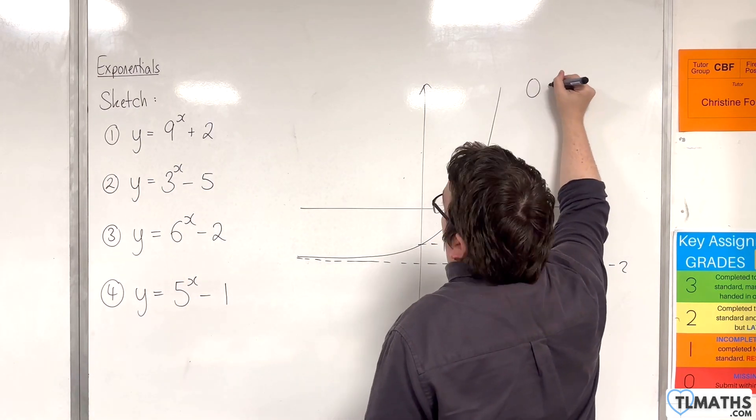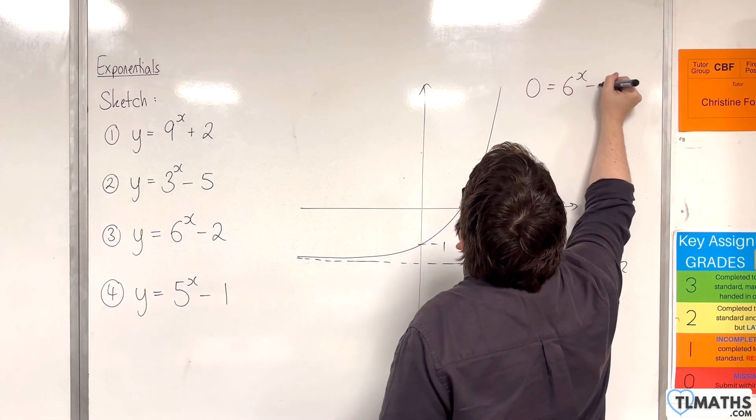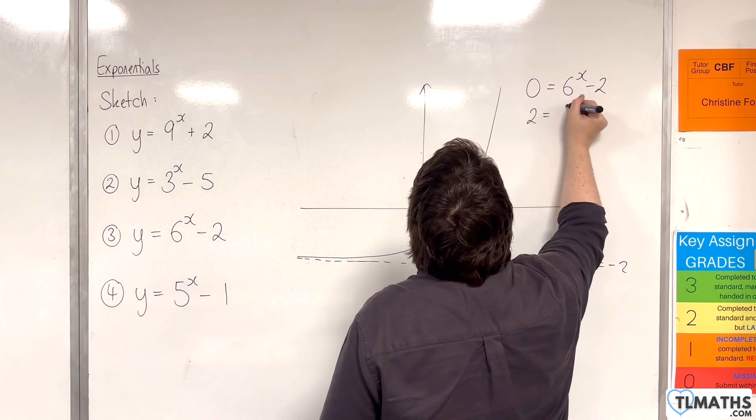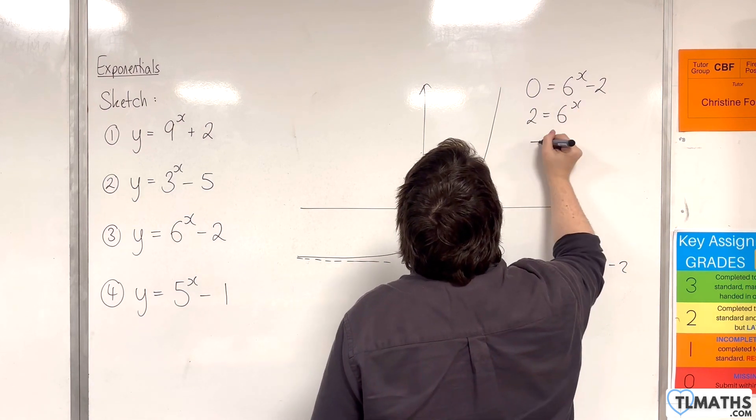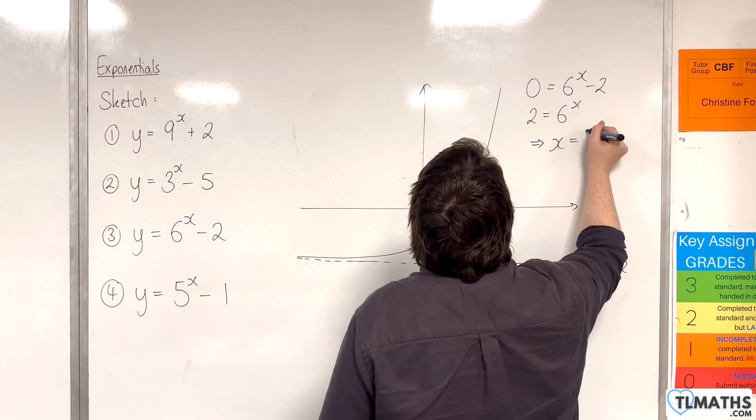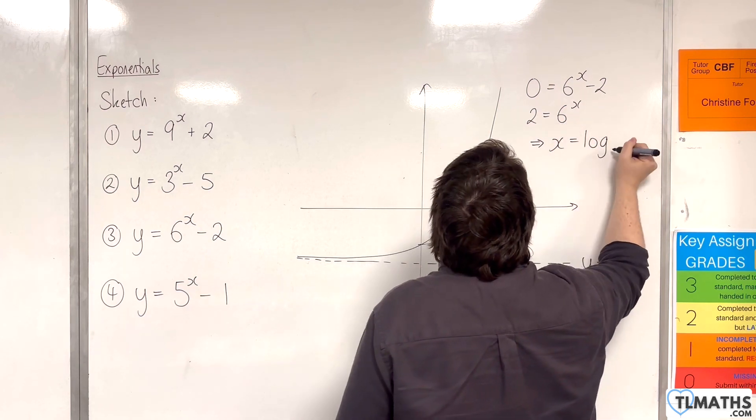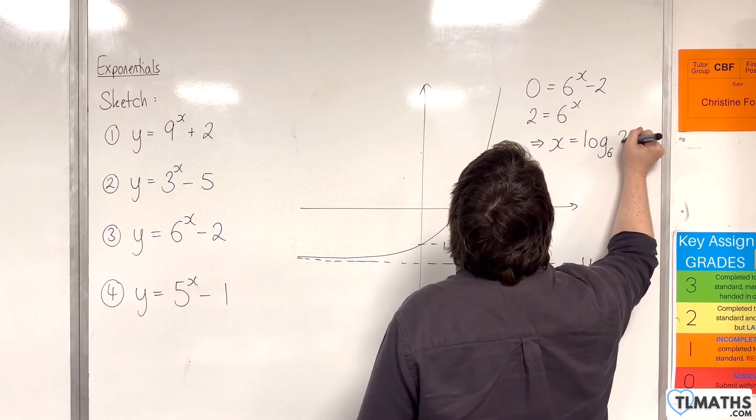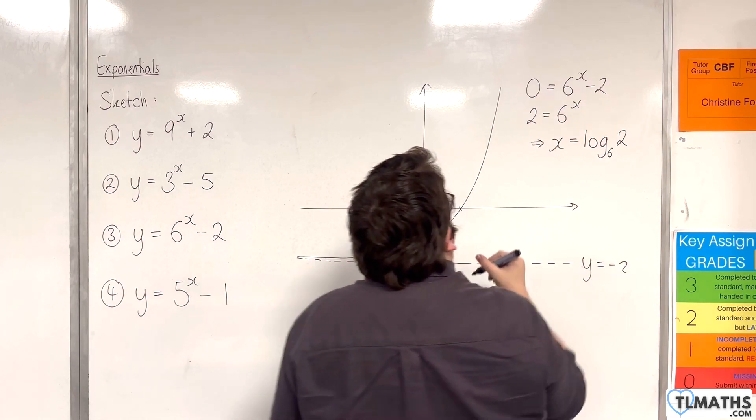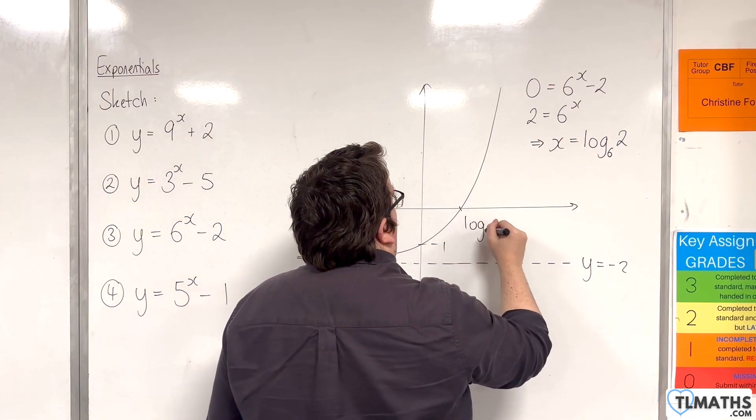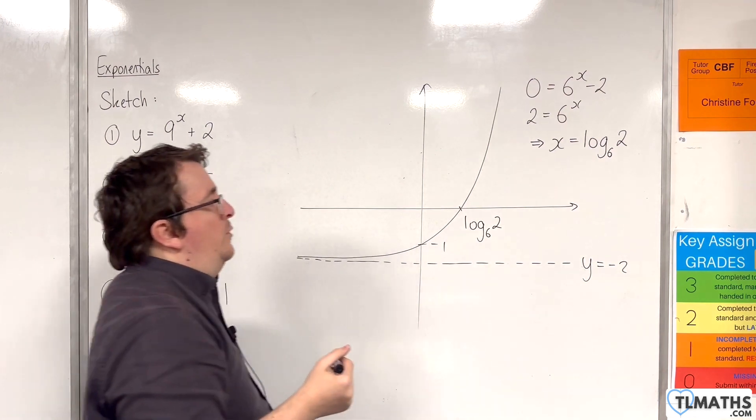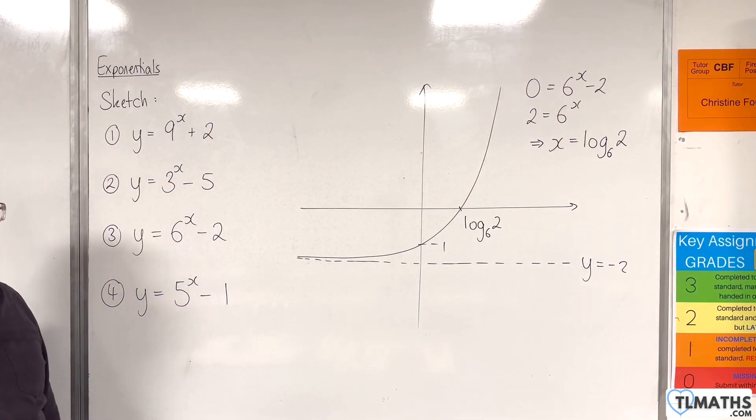And this point is when y is 0. So again we put y is 0. We add 2 to both sides. And then x will be log, and then we use this as the base number, so base 6 of 2. So this will be log base 6 of 2. And that's the exact point at which the curve crosses the x-axis.